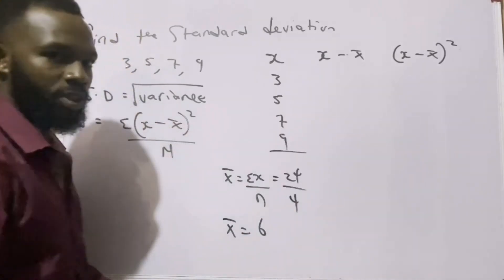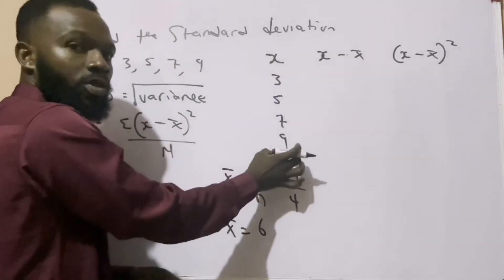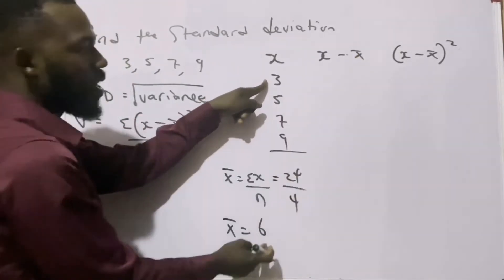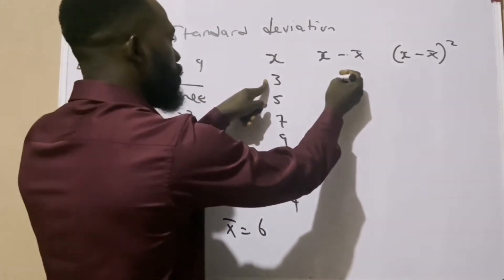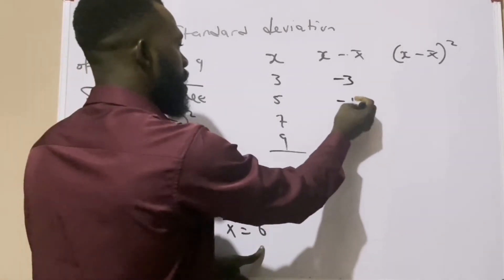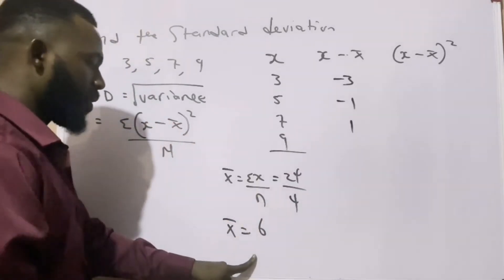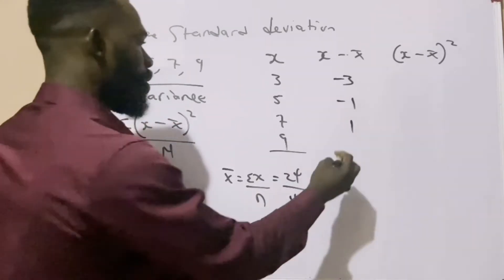Now that we know what mean stands for, it means I can answer for the next column. The next column says x minus mean. So it means 3 minus 6 gives us minus 3, 5 minus 6 gives us minus 1, 7 minus 6 gives us 1, and 9 minus 6 gives us 3.